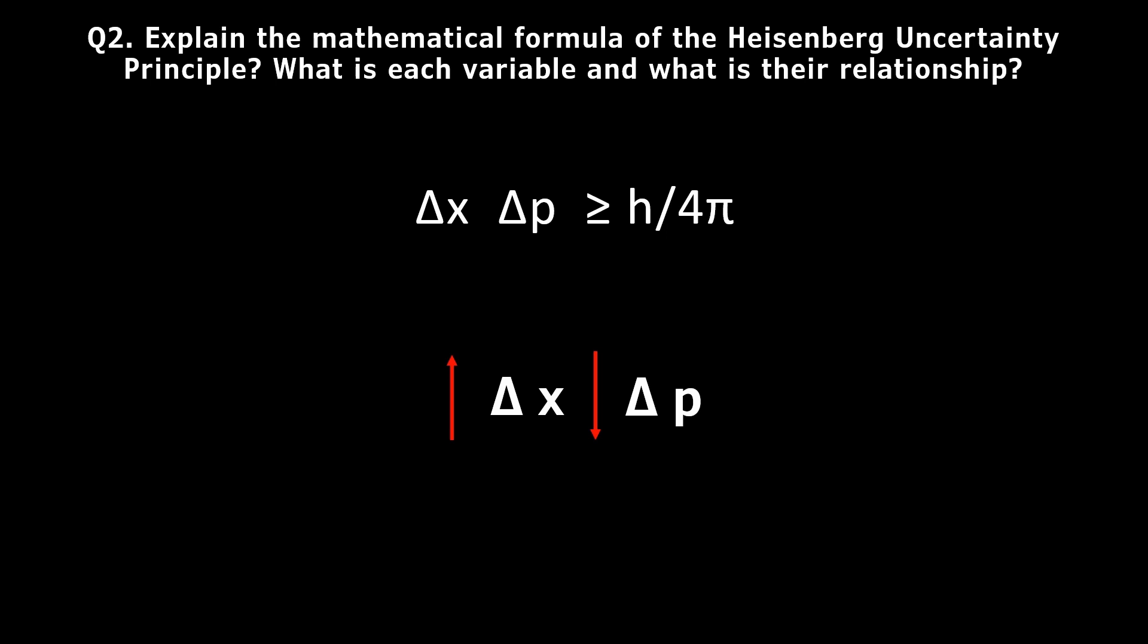The more precisely you know one, the less precisely you know the other. There is a limit to how precisely both can be known, and this limit is h over 4π.